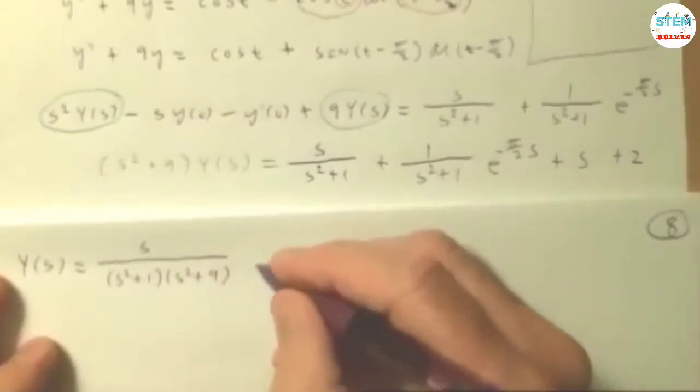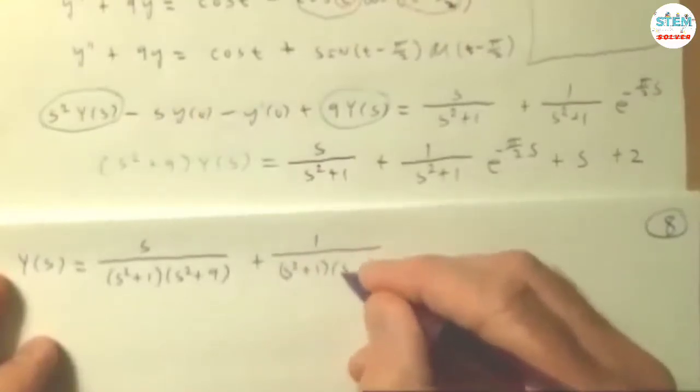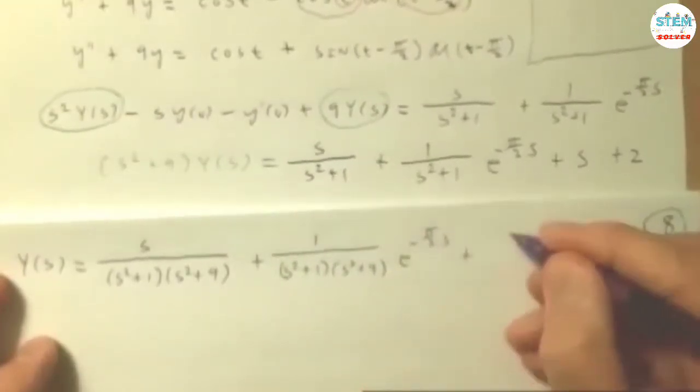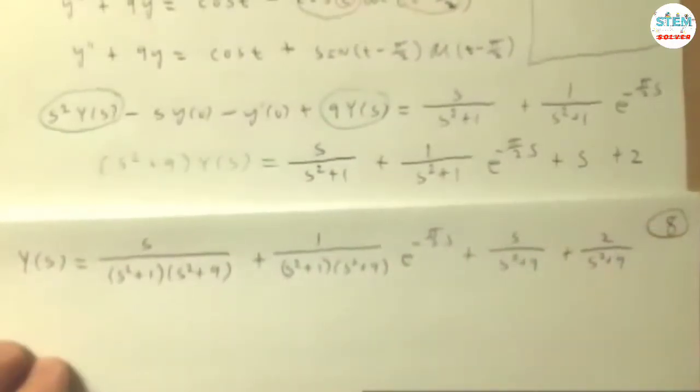Plus 1 over s squared plus 1, s squared plus 9, e to the negative pi over 2s, plus s over s squared plus 9, plus 2 over s squared plus 9.